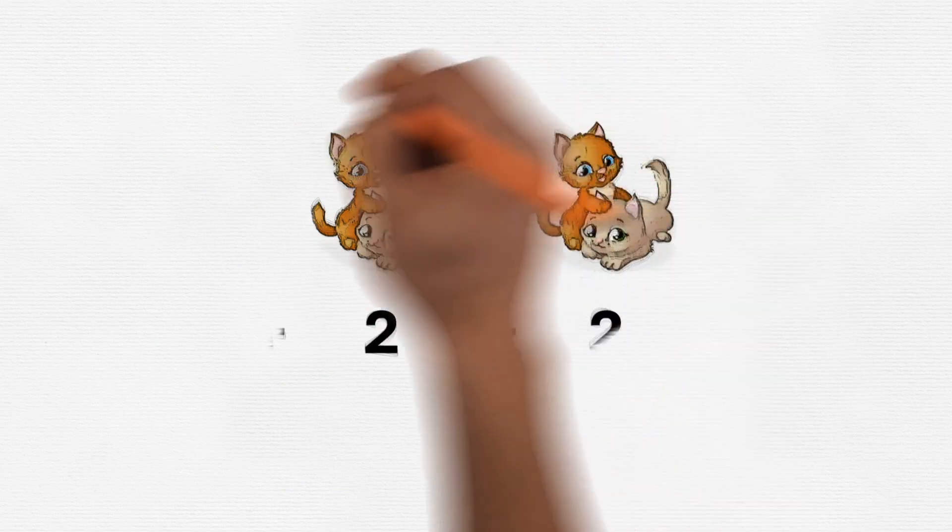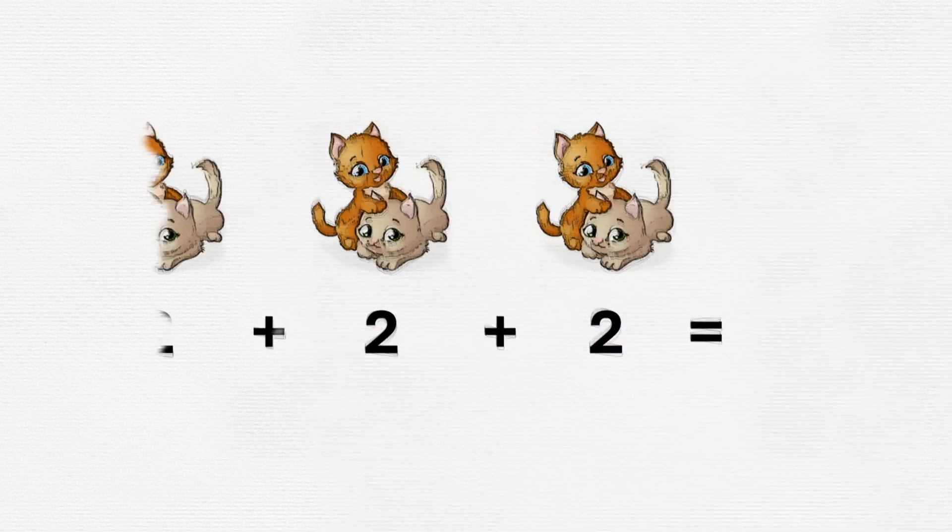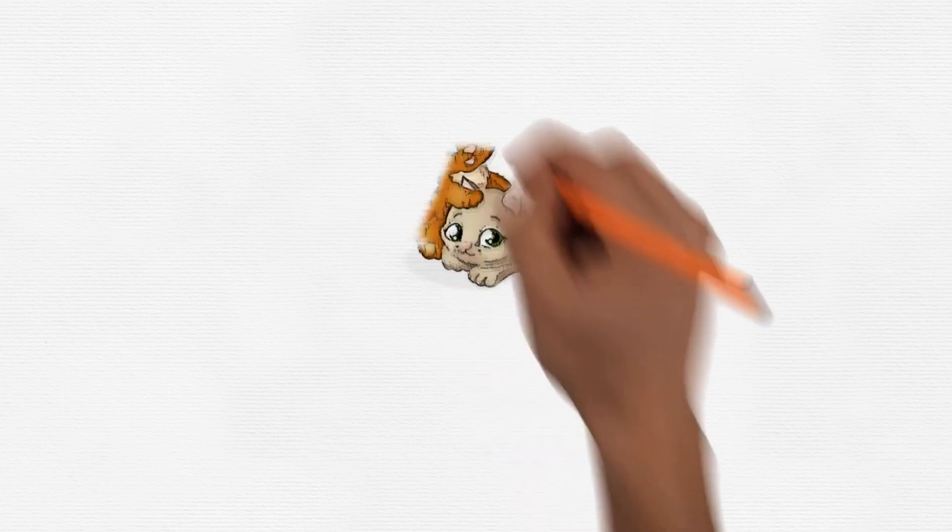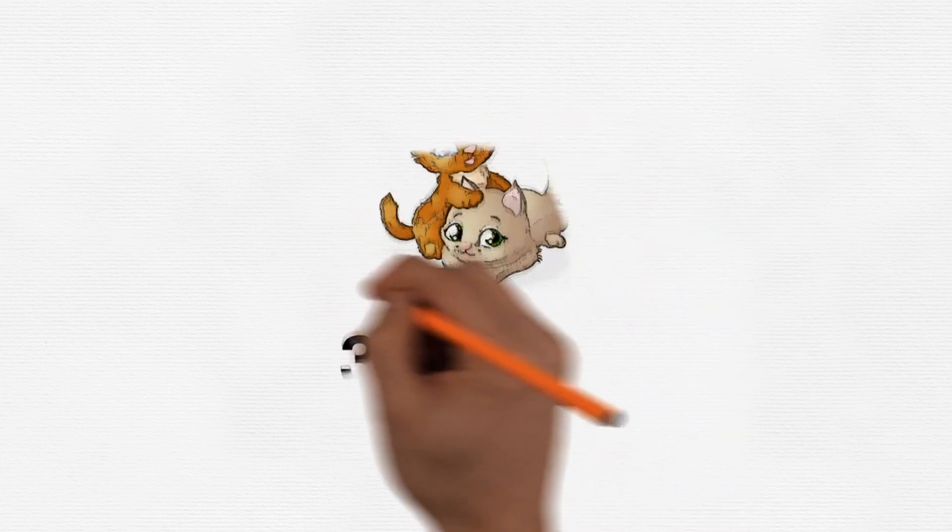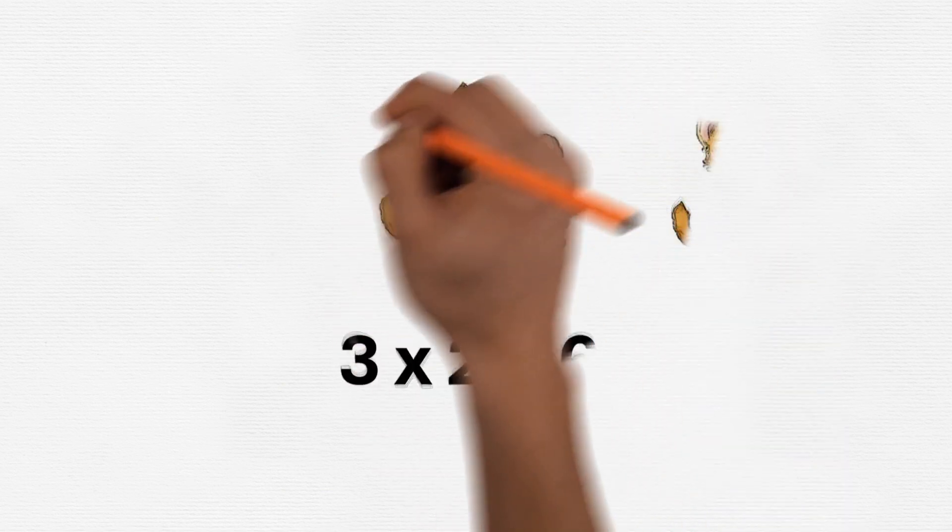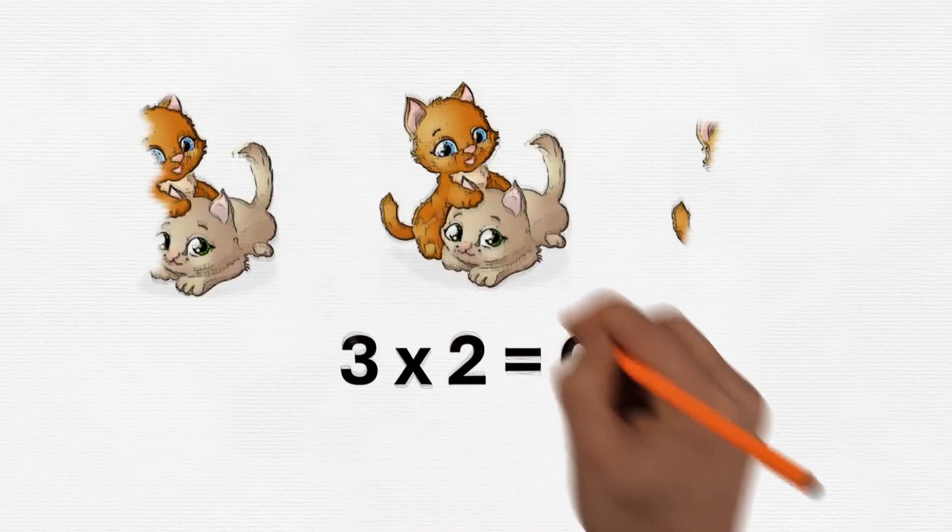That's right, it's six! But guess what? We can use multiplication to make it even more magical. Instead of saying two plus two plus two, we can say three times two, and that's the same as saying three multiply by two, which is equal to six.